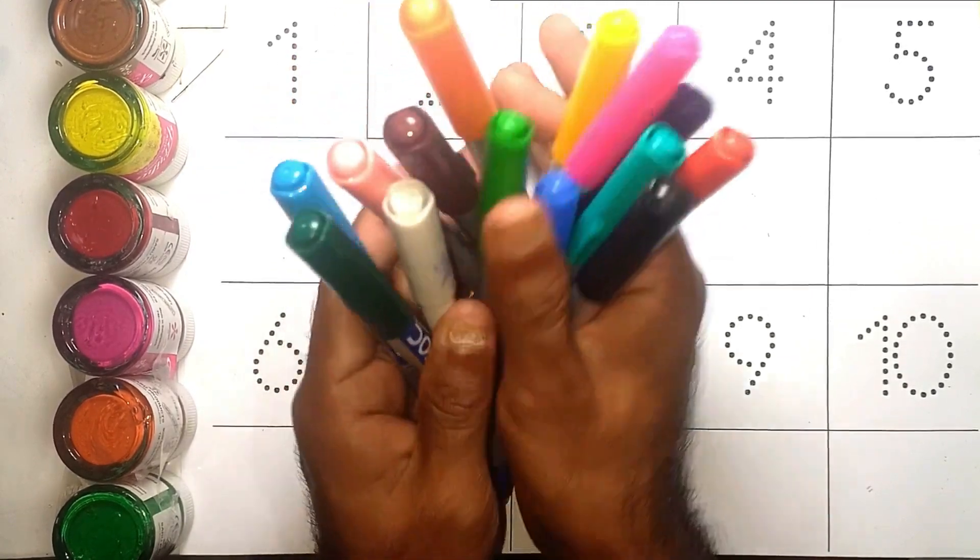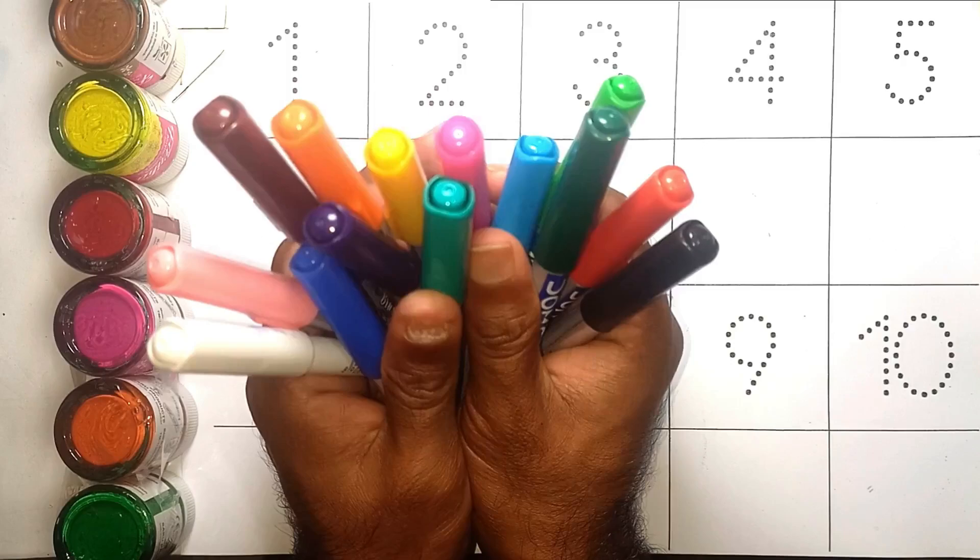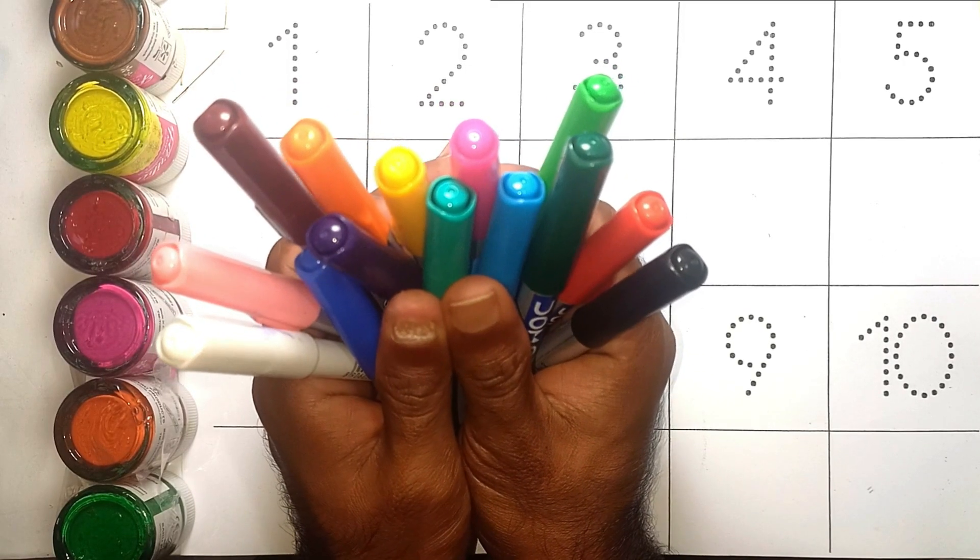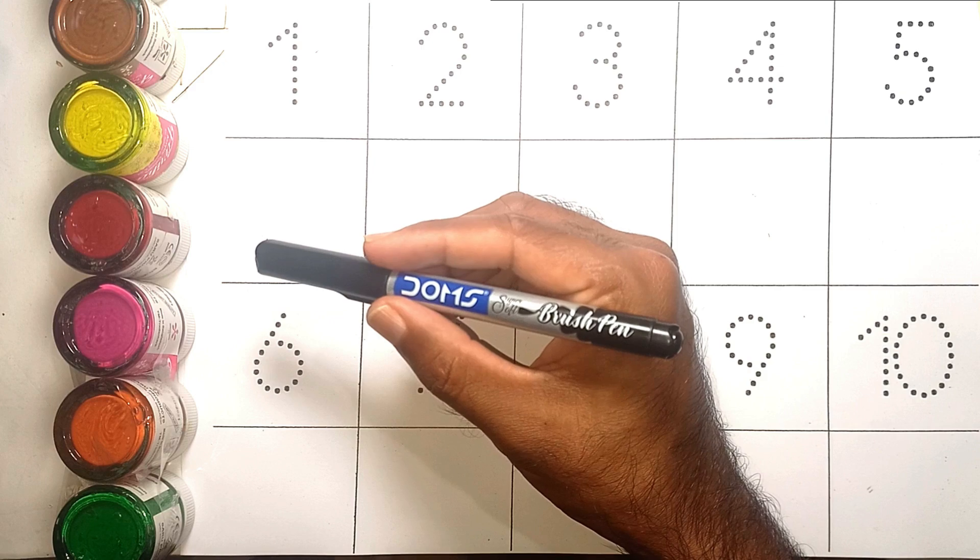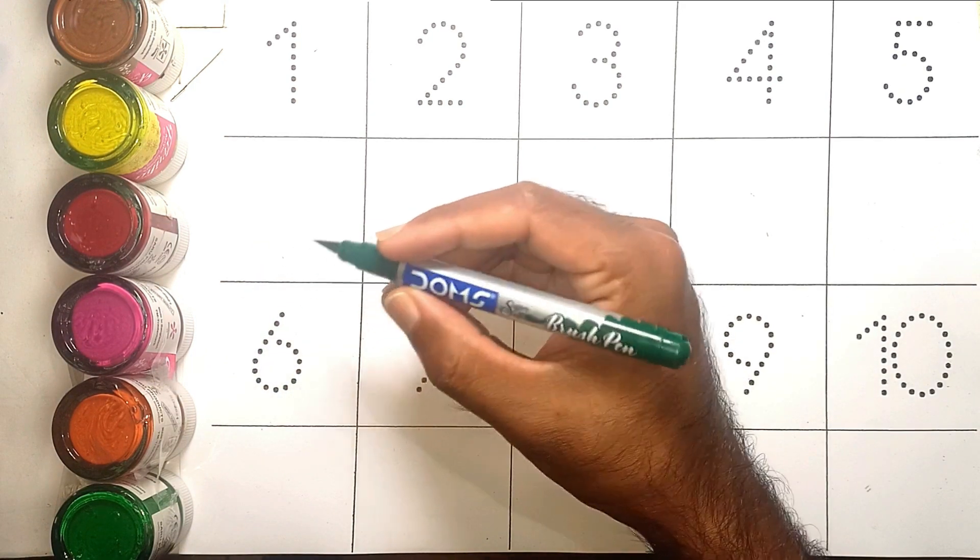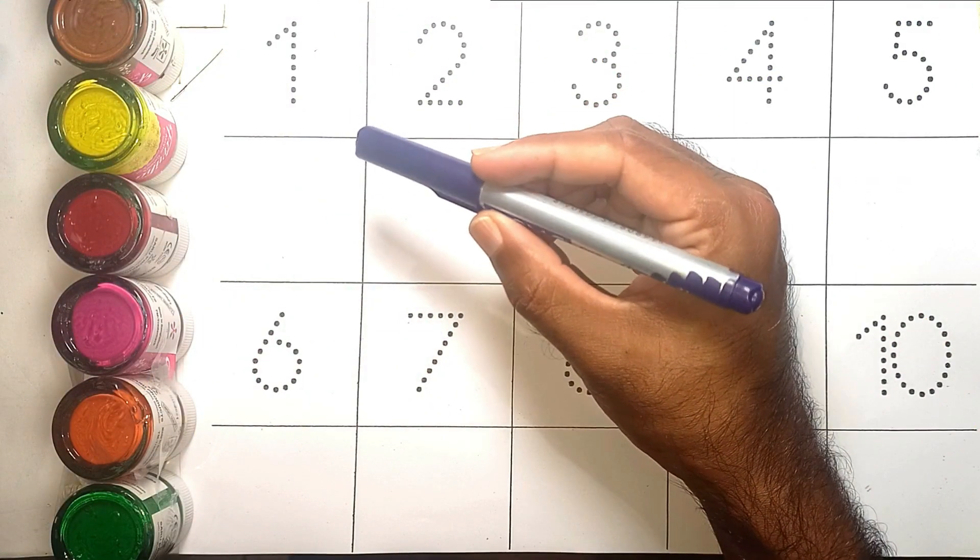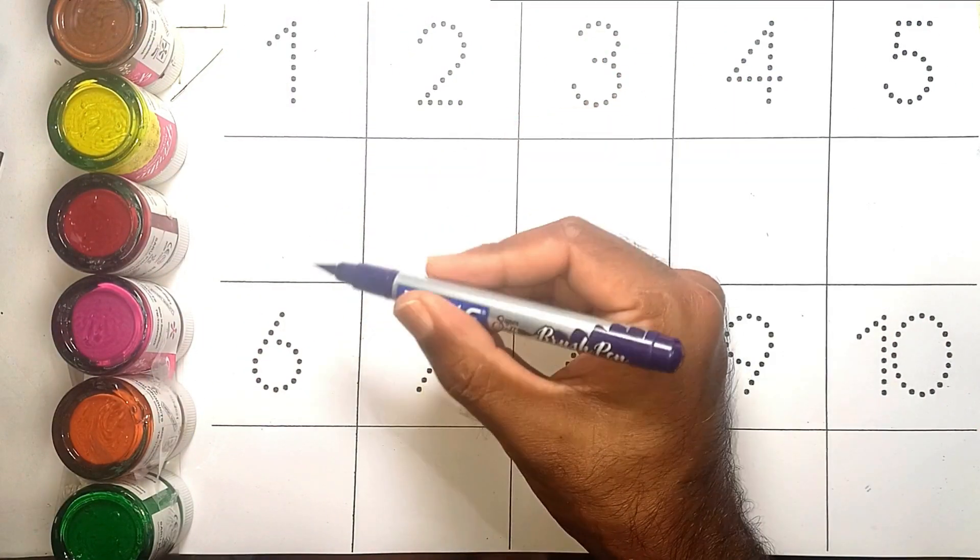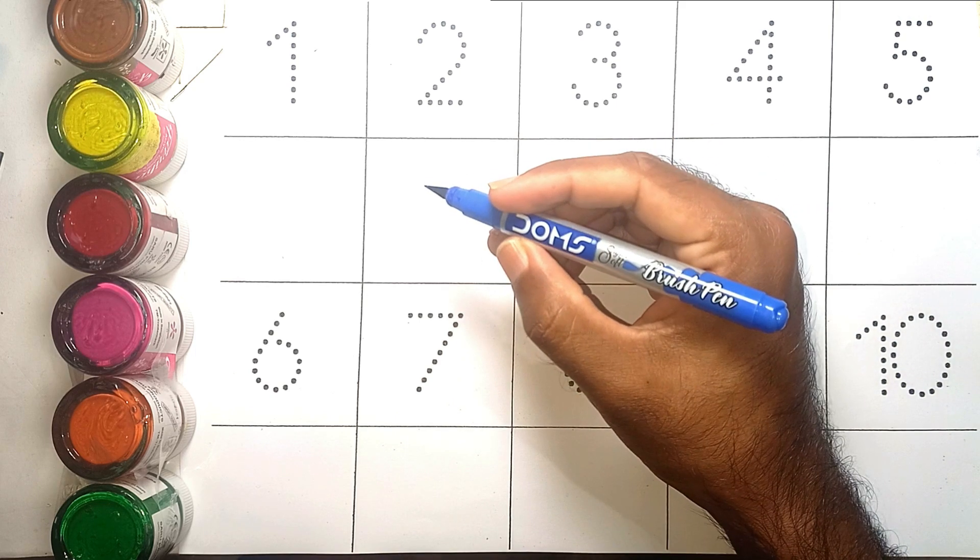Hello kids, now we learn numbers 1 to 10 with your favorite YouTube channel. Let's start. Black color, green color, brown color, blue color, purple color.